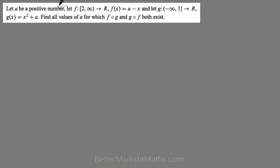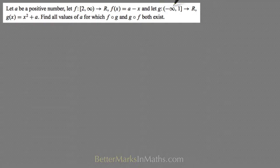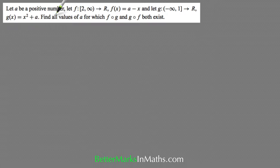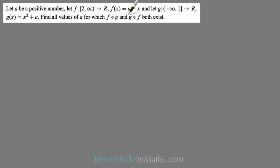In this question, let a be a positive number. Let f have the domain from 2 inclusive to infinity, with f(x) = a − x. Let g have the domain from minus infinity to 1 inclusive, with g(x) = x² + a. You have to find all the values of a for which fog and gof both exist. These are composite functions, where one function is substituted into another.